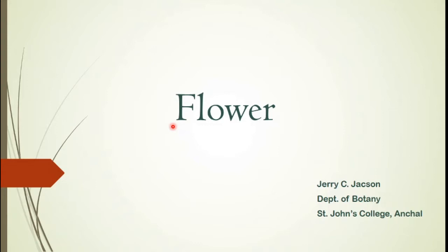Within the flower there is a structure called the ovary, and the ovary is enclosing an ovule. The ovule develops into a seed and the ovary covering the seed develops into a fruit. So the seed is covered in a fruit because the ovule is covered in an ovary, and this characteristic is possible because of the presence of the flower.